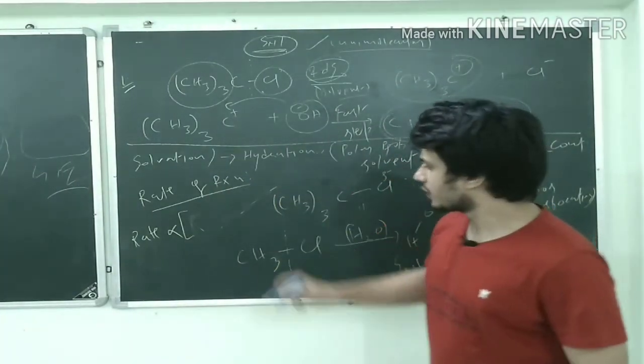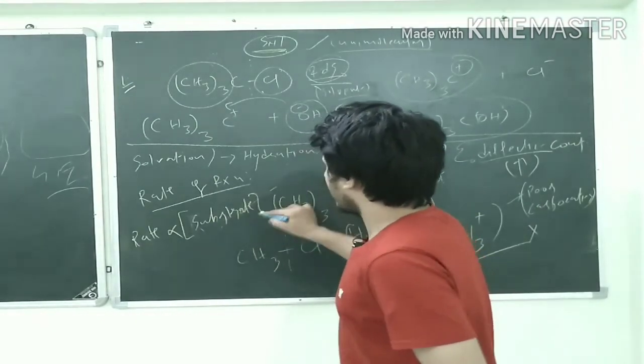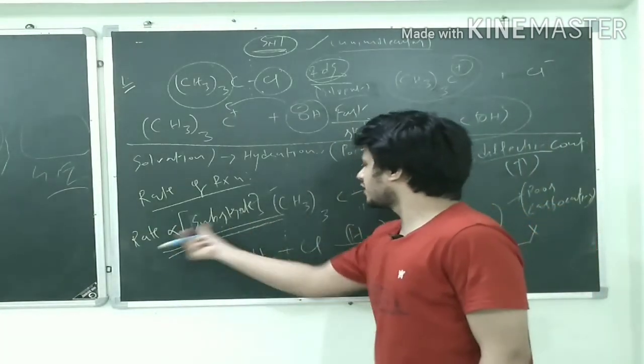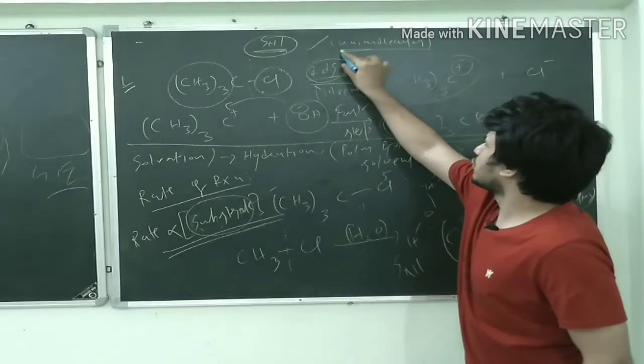The substrate is involved. The rate will only depend on the concentration of the substrate and not on the nucleophile. Simple thing. If the rate depends, it is depending on only one type of molecule. Hence, it is a unimolecular reaction. You might have studied this in chemical kinetics.